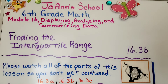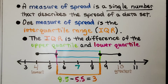Lesson 16.3b: Finding the Interquartile Range. A measure of spread is a single number that describes the spread of a data set. One measure of spread is the interquartile range, or IQR.